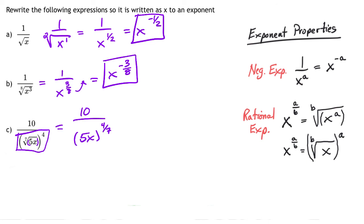Now in this case, when I bring the 5x to the 4/7 to the numerator, I end up getting 10 times whatever gets brought up with it. So it will be 10 times 5x to the power of negative 4/7. That's basically it, and I hope this video helps.